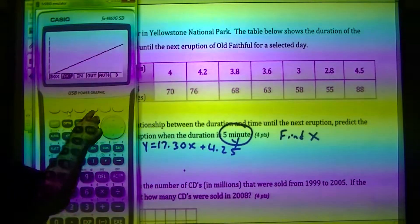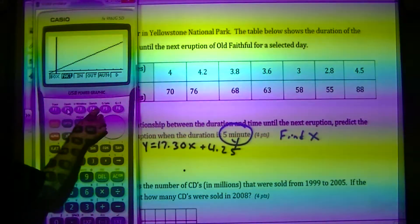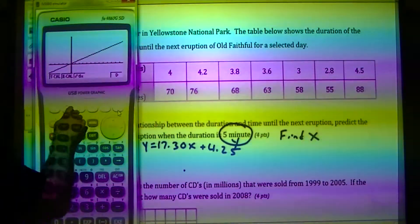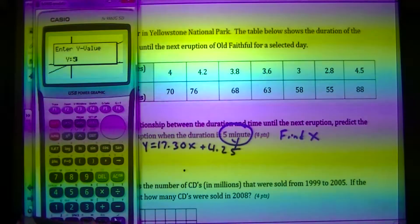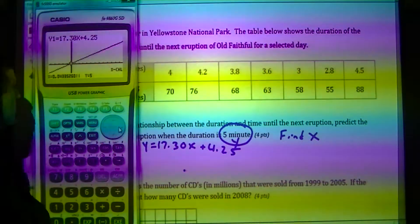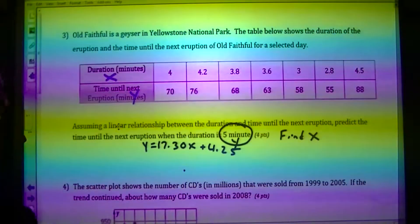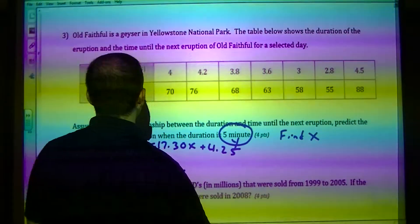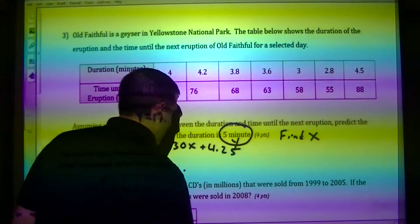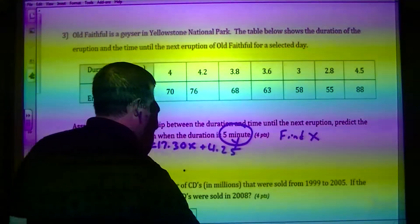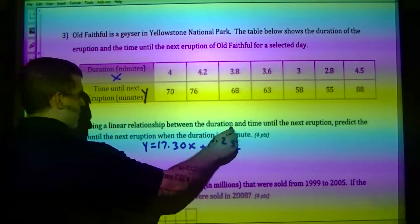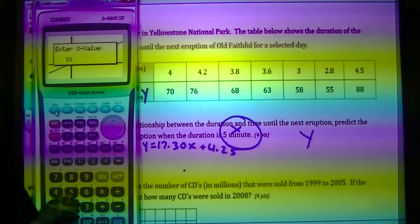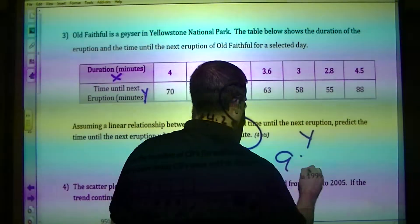I draw and zoom out. Since I have Y and need to find X, I do G-solve X-calc with Y equals 5. Wait — actually five minutes refers to X, so I need to find Y instead. G-solve Y-calc gives me 90.75. The reason I caught my mistake is that 0.04 seconds didn't make any logical sense.